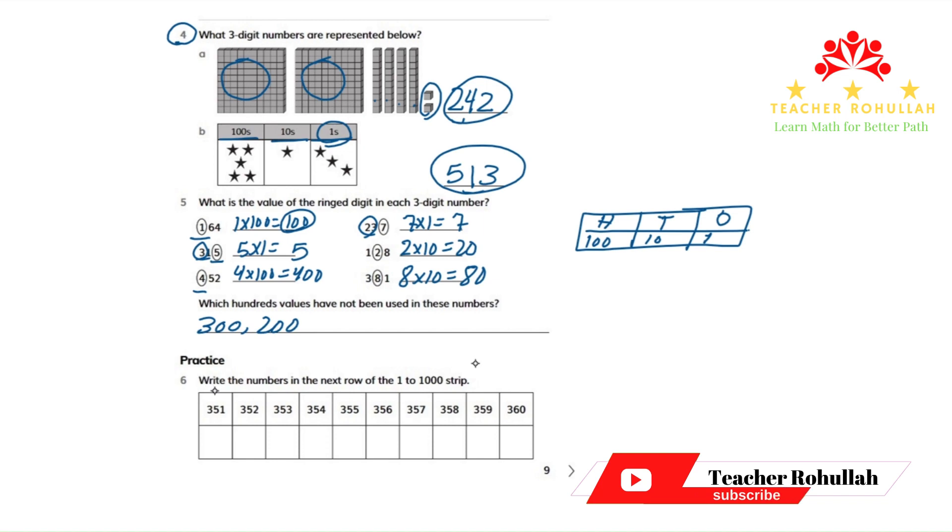Question number six is asking us to practice. It says, write the numbers in the next row of the one to one thousand strip. One to one thousand strip.